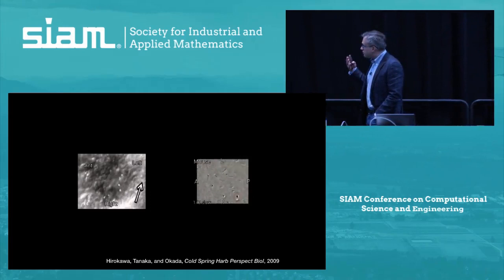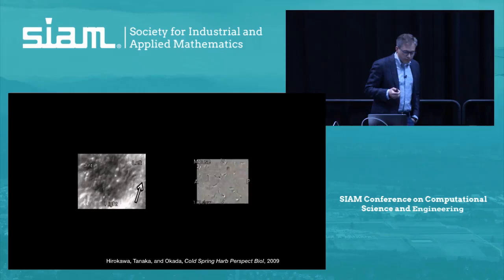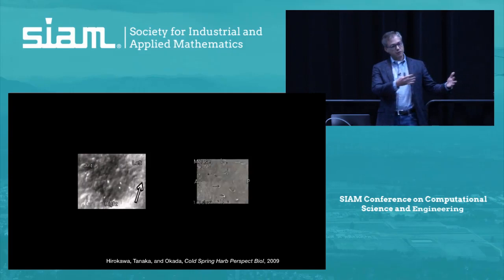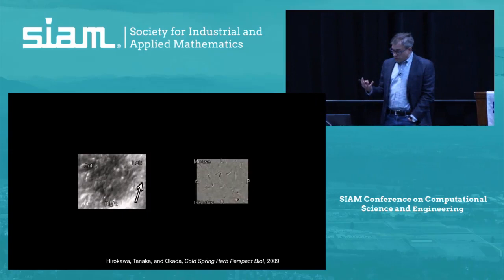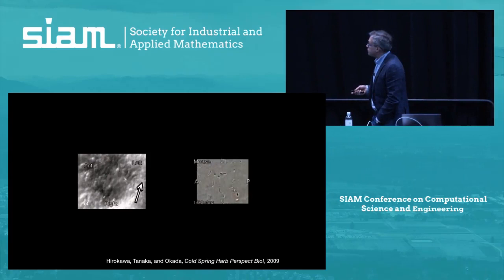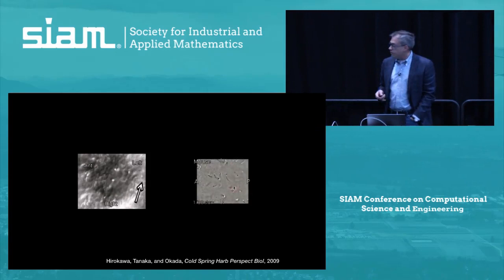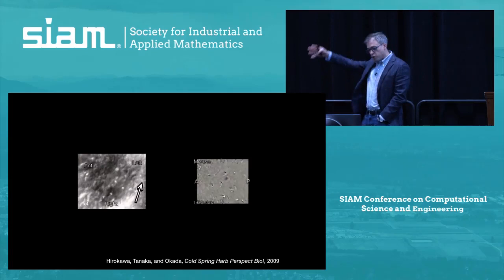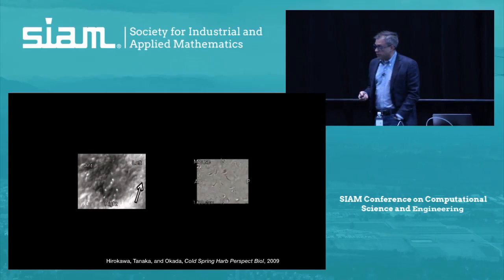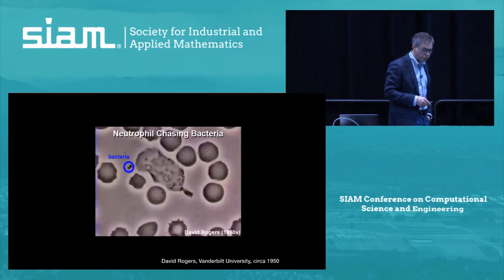Fluid structure interaction is also a critical part of left-right body plan development. Most people recognize that your heart is on the left side of your body, your liver is on the right side, and the left brain and right brain are different. Something establishes this asymmetric body plan, and it's fluid structure interaction. This is an experimental movie looking at a structure called the ventral node, where a fluid flow goes over cilia. The asymmetry of the microstructure of these cilia gives rise to a coordinated clockwise motion that tells your body left from right during development.